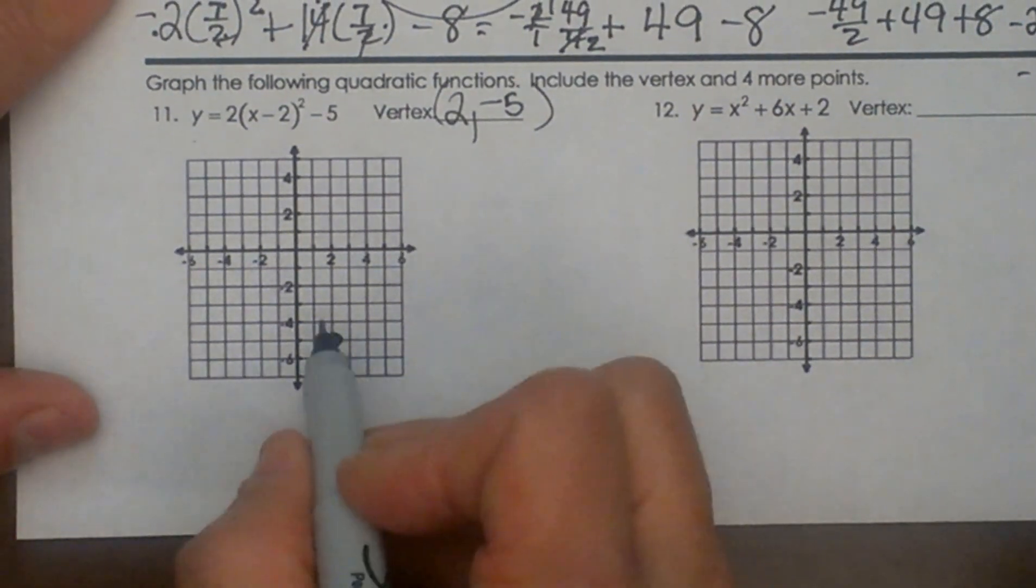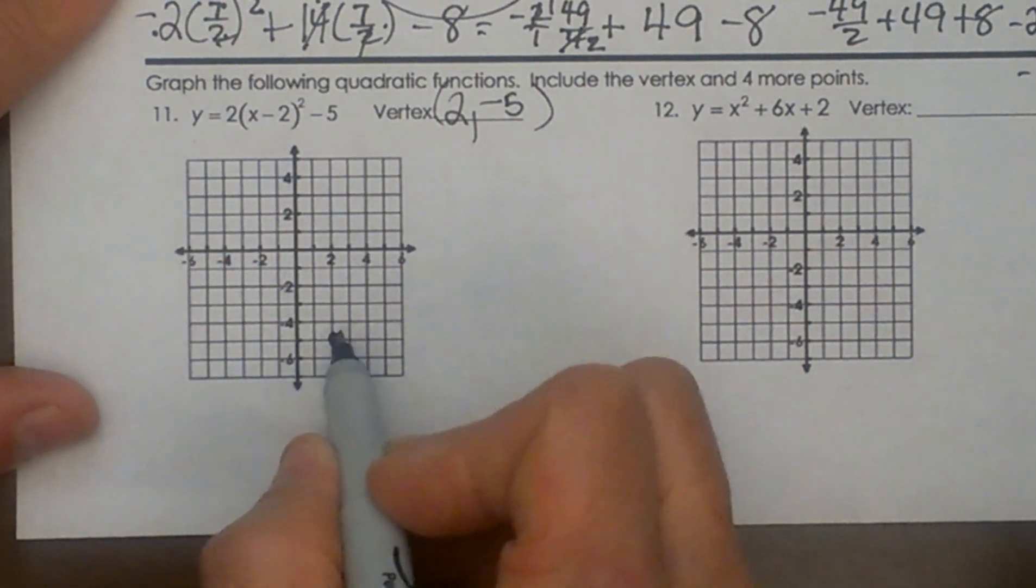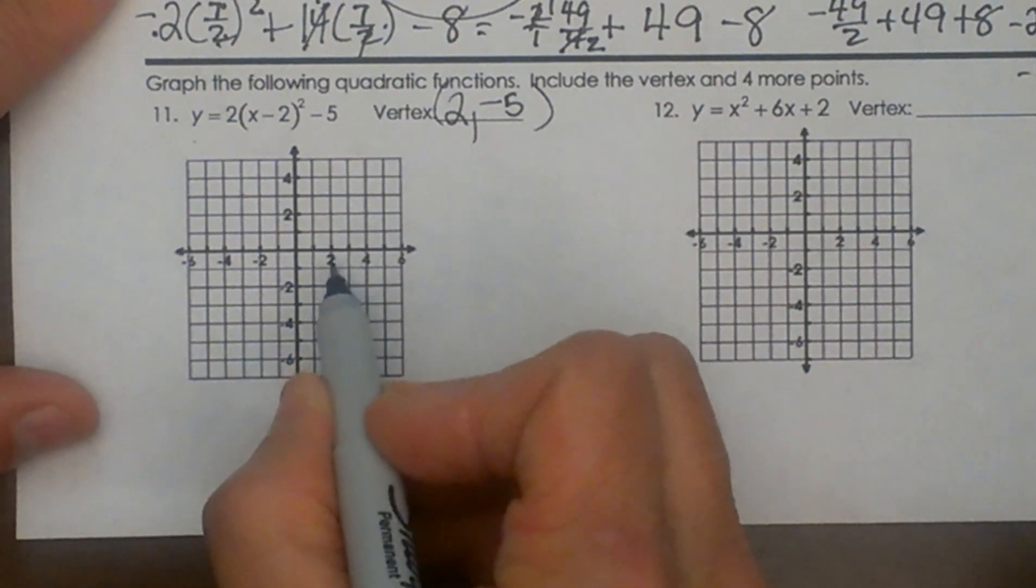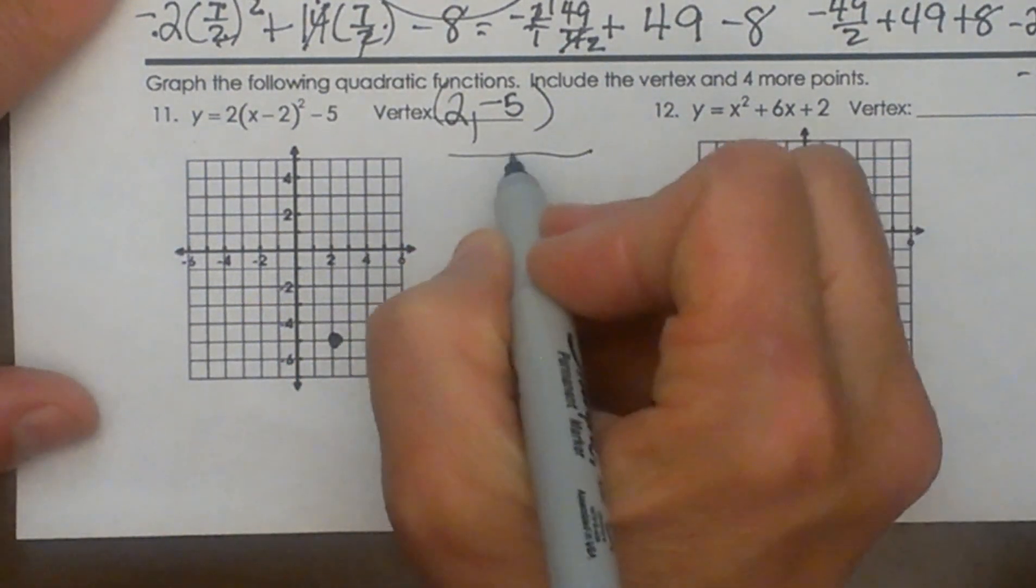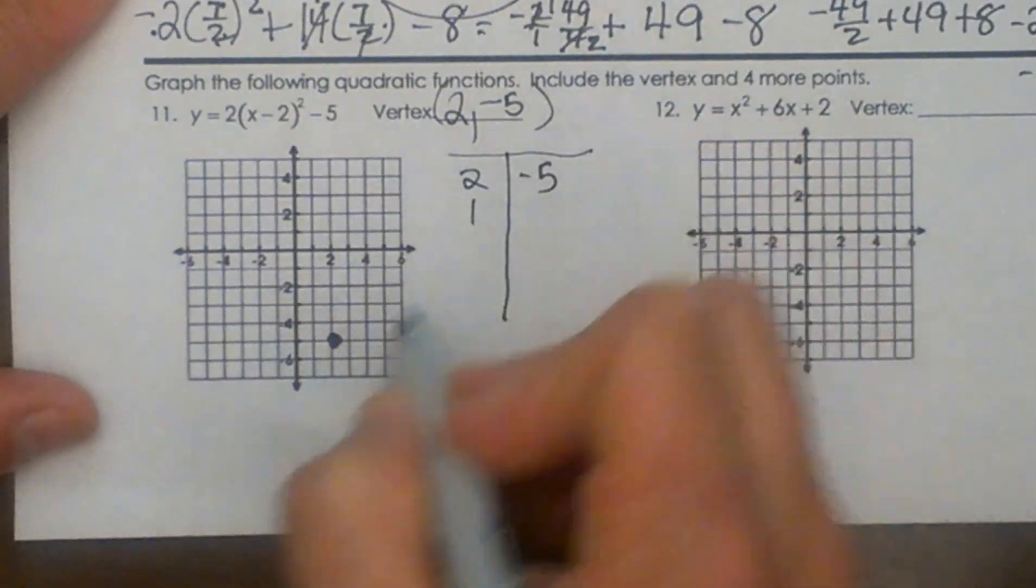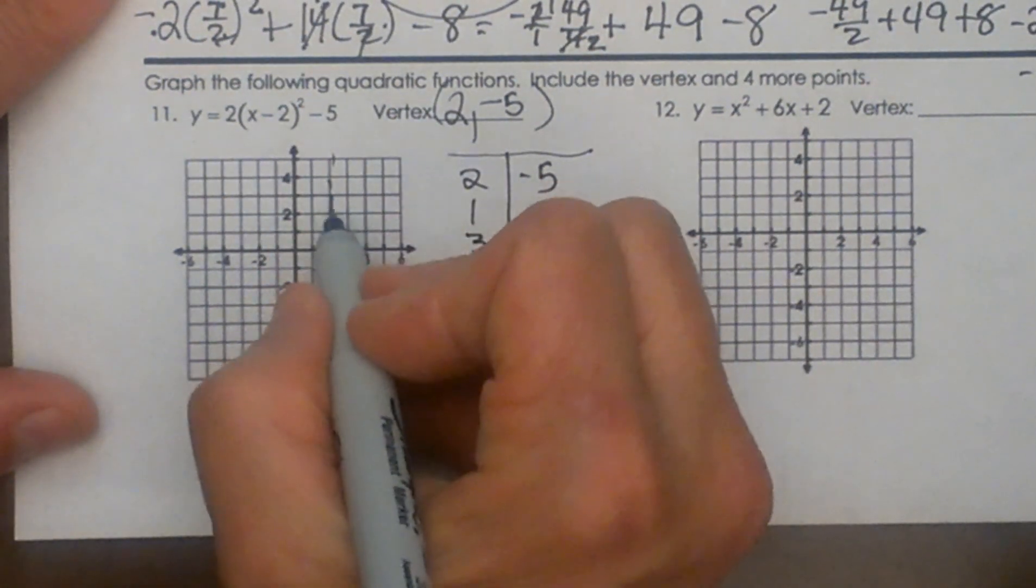Now strategically the best thing to do is plug in a point into your equation one to the left and one to the right of the vertex. So since my vertex x coordinate is 2 I can plug in a 1 and I can plug in a 3.